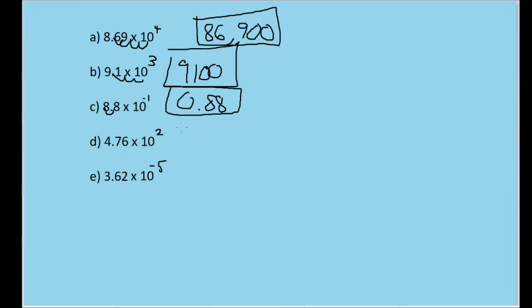For 4.76 times 10 squared, we're once again making the number larger by an order of magnitude of 2. So it becomes 476.